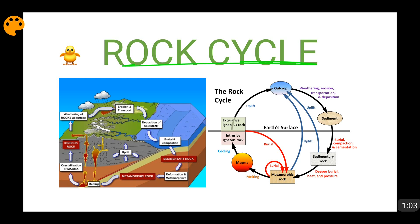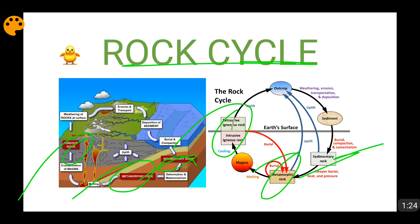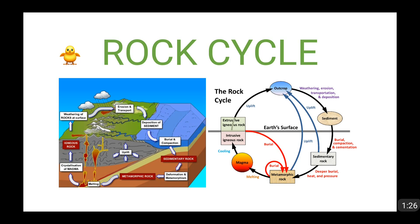Now, the rock cycle is basically the conversion between igneous, sedimentary, and metamorphic rocks — how igneous is becoming sedimentary, how sedimentary is becoming metamorphic, and how this interconversion is going on. This is all that is important and is covered in this video. Here you can see igneous, sedimentary, and metamorphic shown in different figures — all showing the same things, just the way of showing is different.